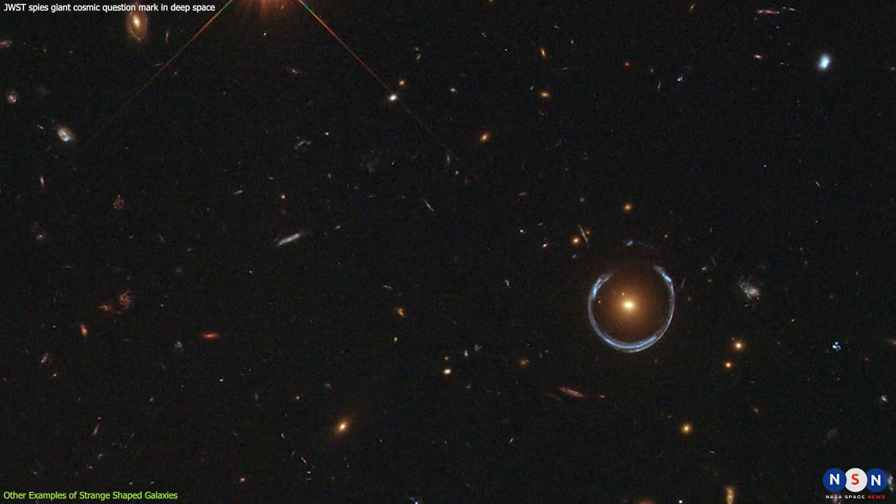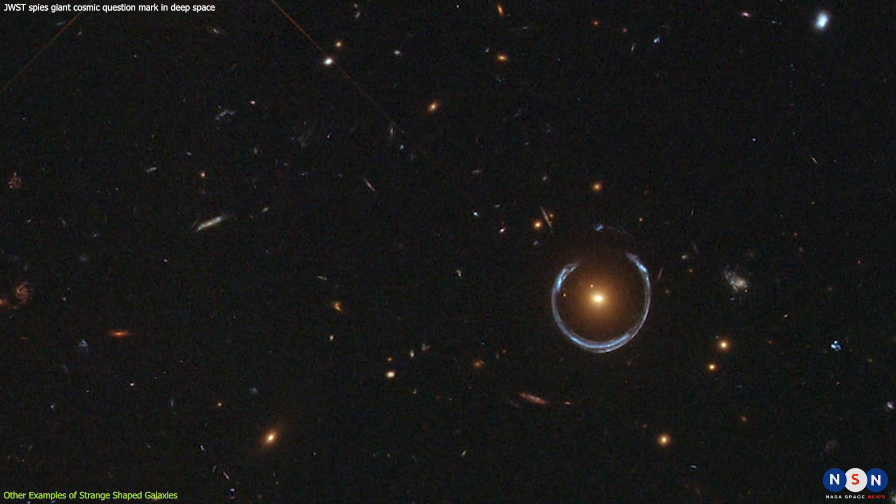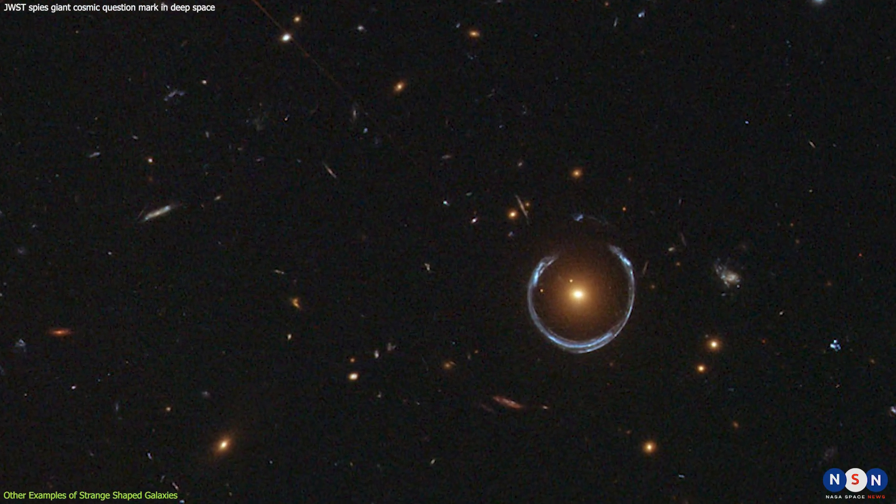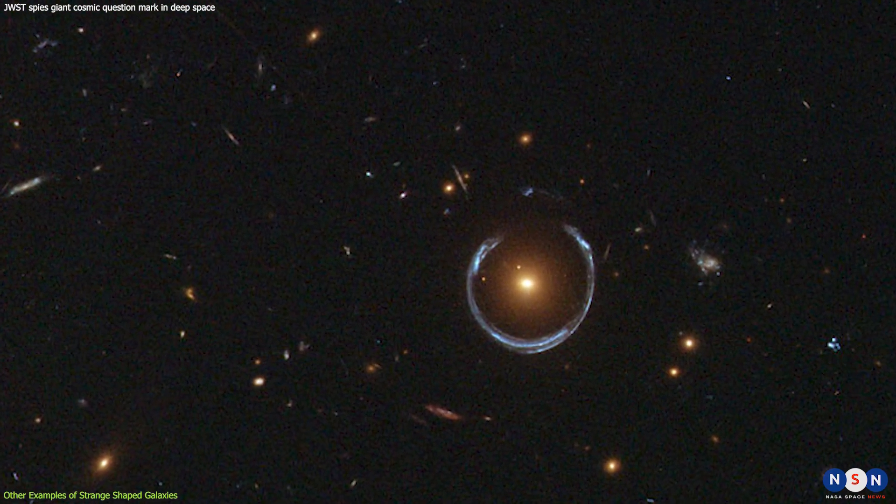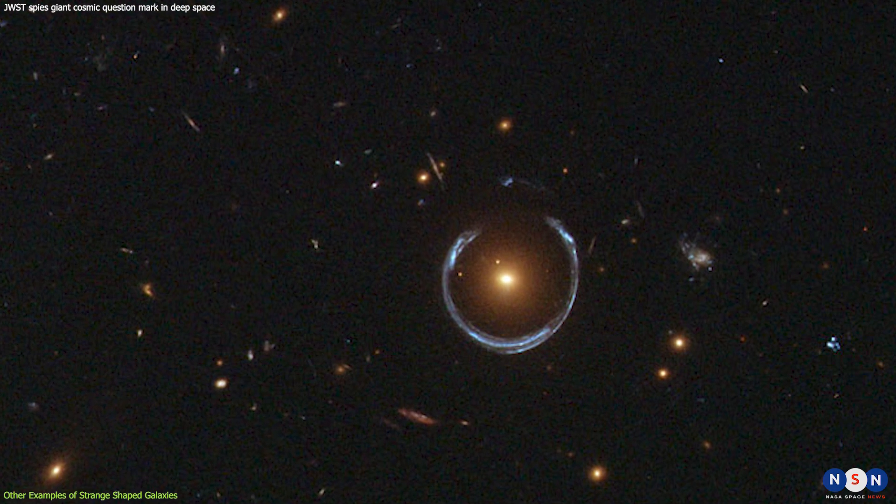Another example is the cosmic horseshoe, a galaxy that appears as a nearly complete ring around another galaxy. The ring is actually an image of a background galaxy that is stretched and curved by the gravitational lensing effect of the foreground galaxy.